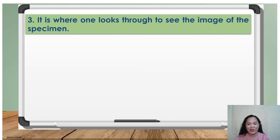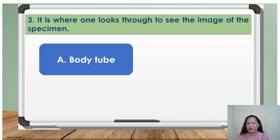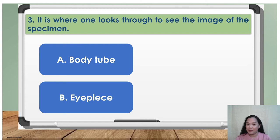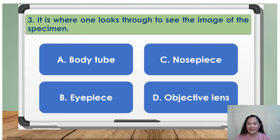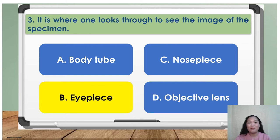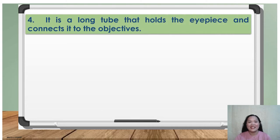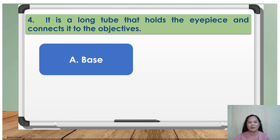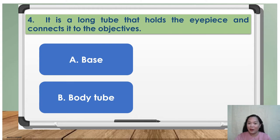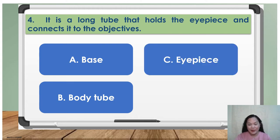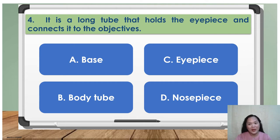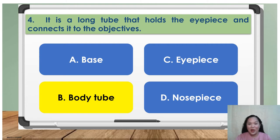Number three: it is where one looks through to see the image of the specimen. A. Body tube, B. Eye piece, C. Nose piece, D. Objective lens. Answer: B, Eye piece. Number four: it is a long tube that holds the eye piece and connects it to the objectives. A. Base, B. Body tube, C. Eye piece, D. Nose piece. The answer is B, Body tube.